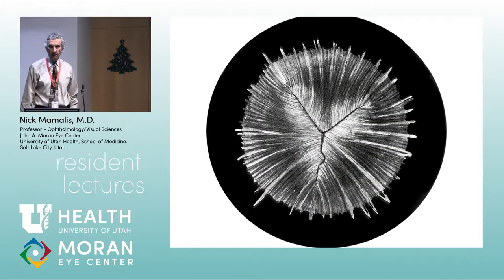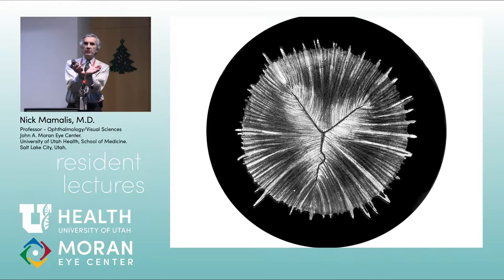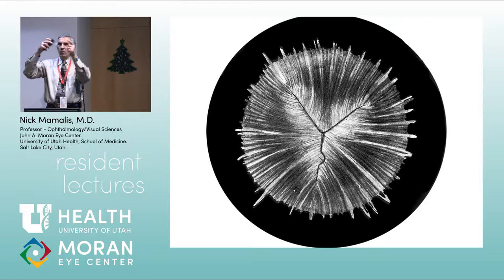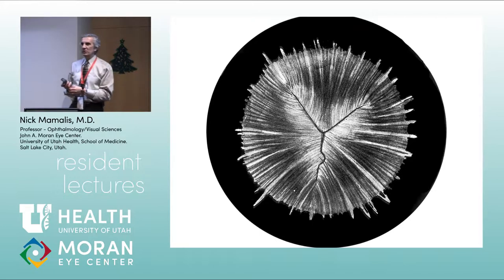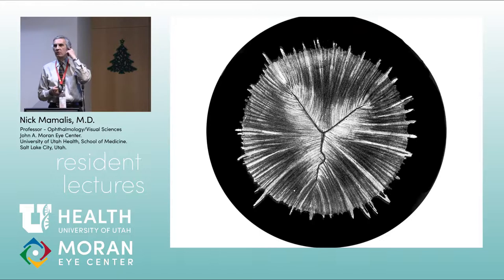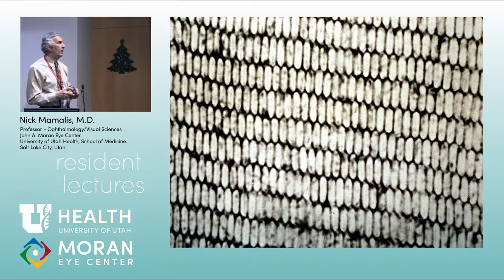The Y sutures form because those lens fibers come around both posteriorly and anteriorly, and since the lens is not a perfect sphere they don't meet at a point — they form a Y. There's an anterior and a posterior Y suture. Your mission today when looking at patients with a slit lamp is to find the Y sutures — they're subtle but visible. The front one is typically inverted and the back one is a normal Y shape.